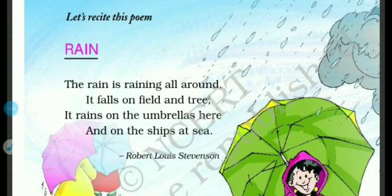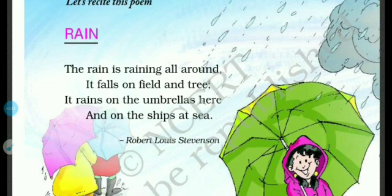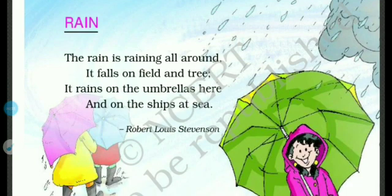First of all, we will recite this poem. So let's begin. Let's recite the poem. The rain is raining all around. It falls on field and tree. It rains on the umbrellas here and on the ships at sea. This is the poem written by Robert Louis Stevenson.